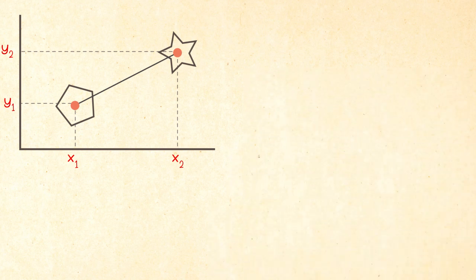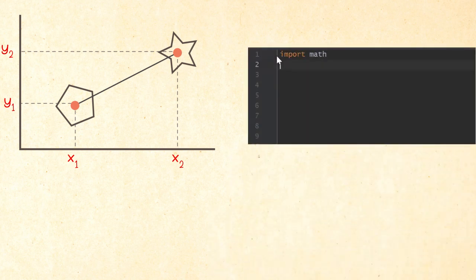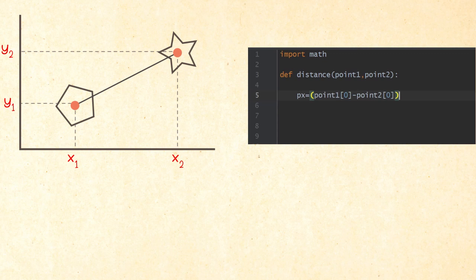Implementing this is super easy. Just declare a function that takes the two point coordinates as a tuple and calculate the px and the py terms that corresponds to the difference between the x's and the y's of the two points. Then you just return the square root of these terms after squaring them and adding them together.